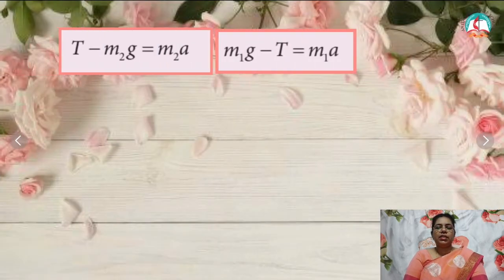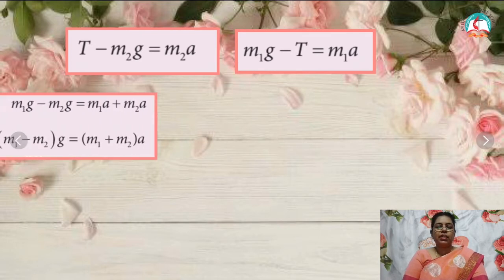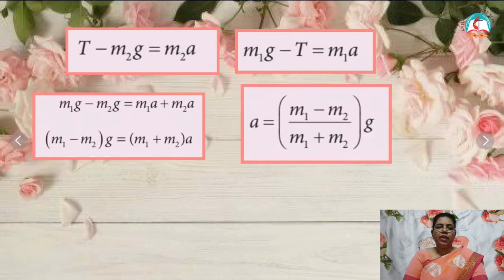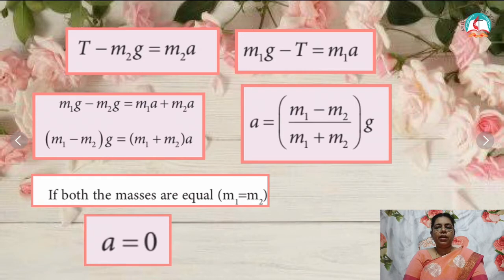By adding the two equations — T minus M2g equals M2a and M1g minus T equals M1a — we get M1g minus M2g equals M1a plus M2a. Therefore (M1 minus M2)g equals (M1 plus M2) into A. So acceleration A equals (M1 minus M2) divided by (M1 plus M2), times g. If both masses are equal, that is M1 equals M2, then A will be equal to zero.